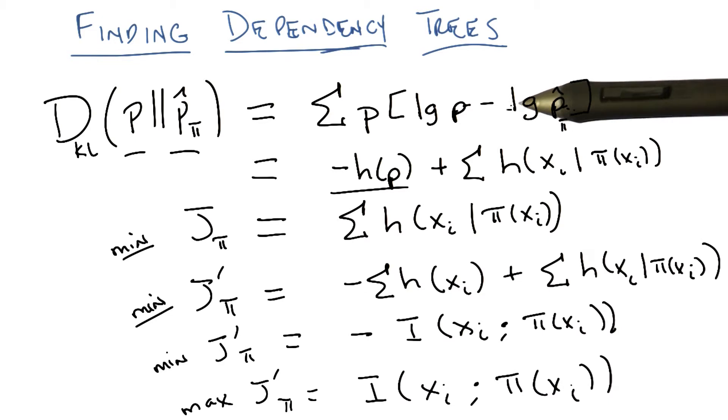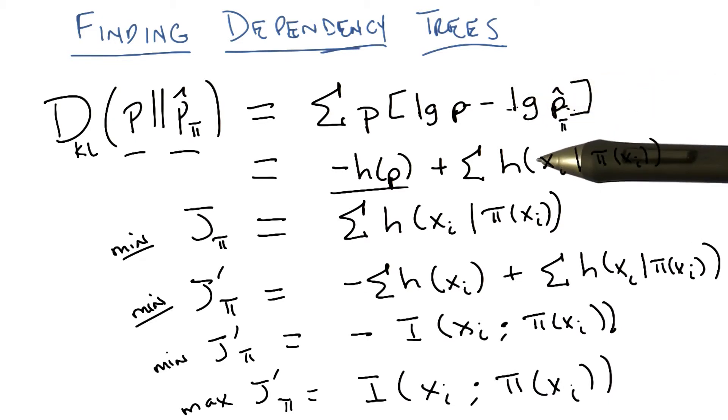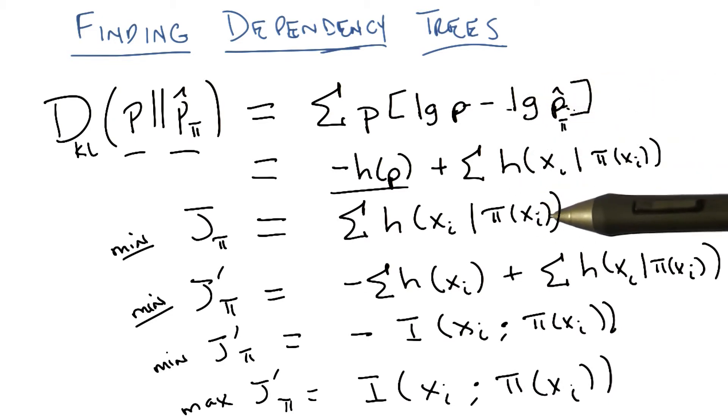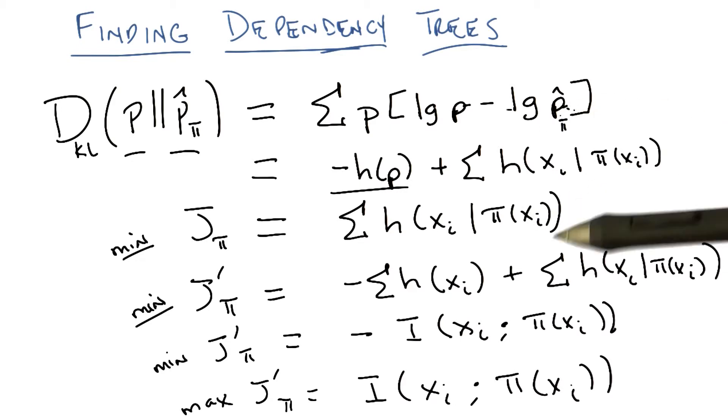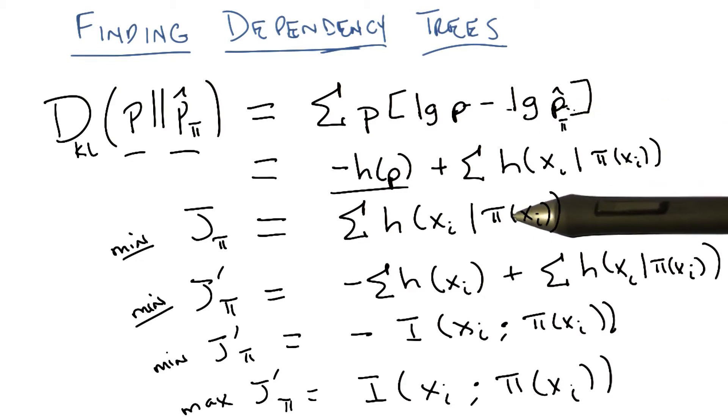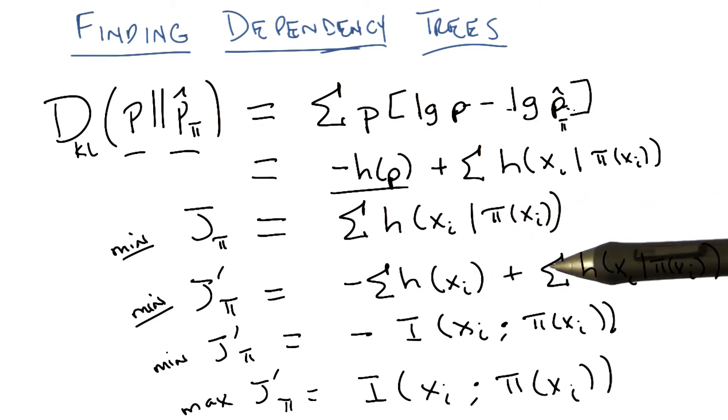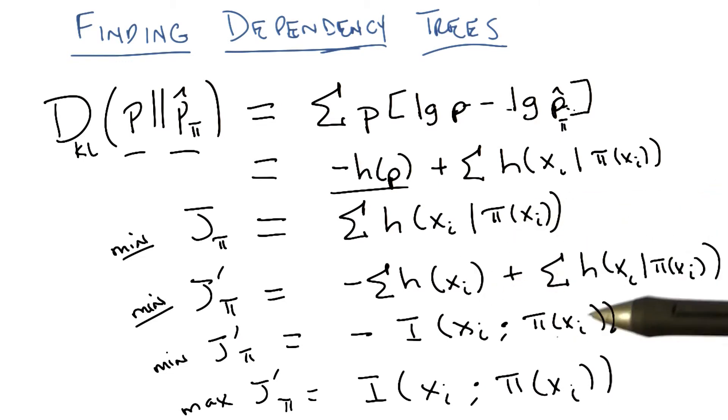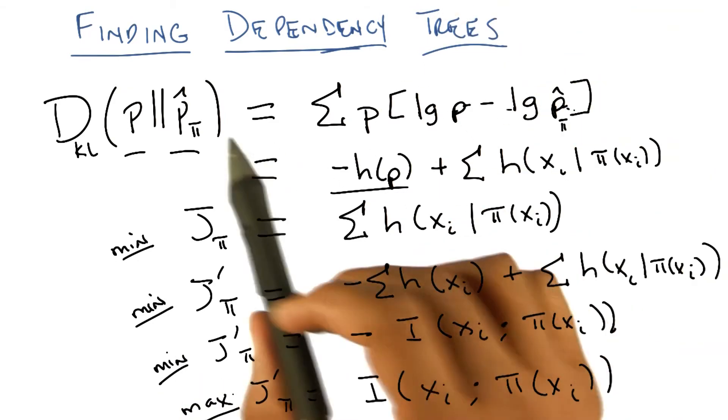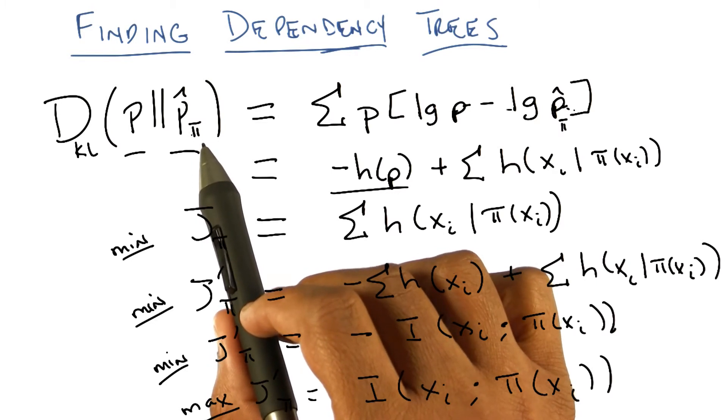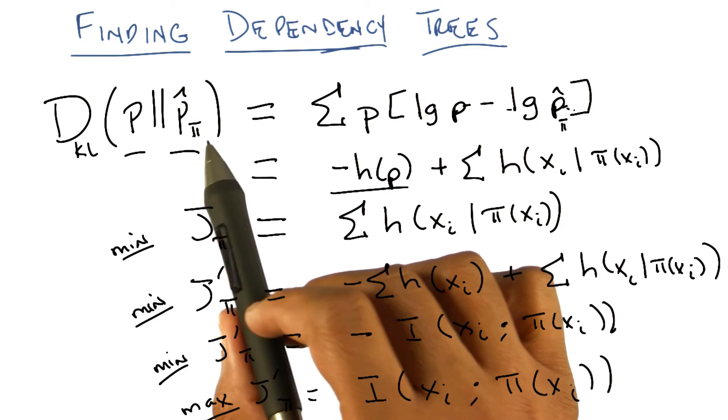But before we do that, let's just make certain that this makes sense. We wanted to minimize the Kullback-Leibler divergence because that's what Shannon told us to do. We work it all out, and it turns out that we really want to minimize a cost function of conditional entropies. We threw this little trick in, which allowed us to turn those conditional entropies into mutual information. And what this basically says is that to find the best π, the best parents, the best dependency tree, means you should maximize the mutual information between every feature and its parent. And that sort of makes sense. I want to be associated with the parent that gives the most information about me.